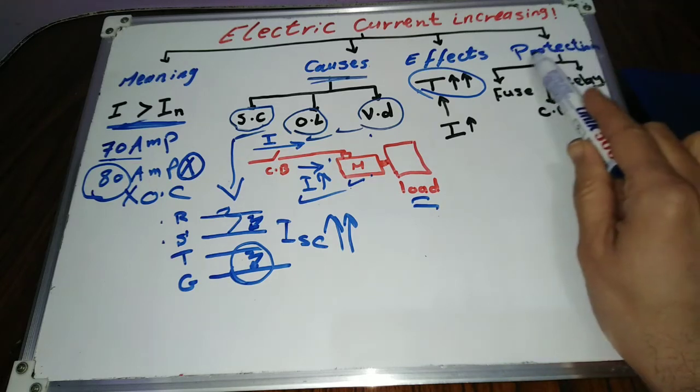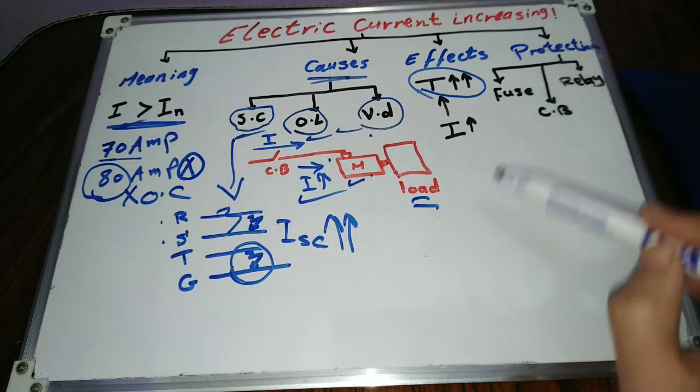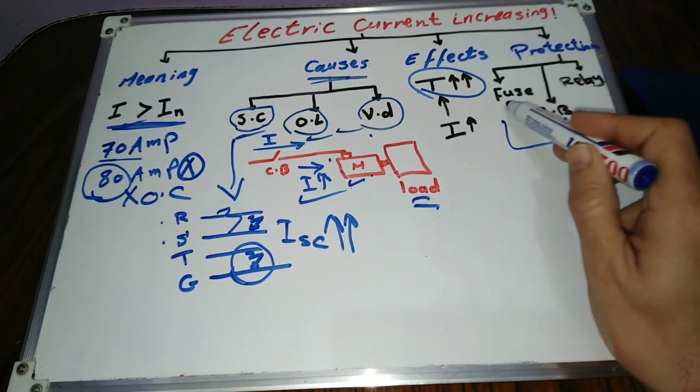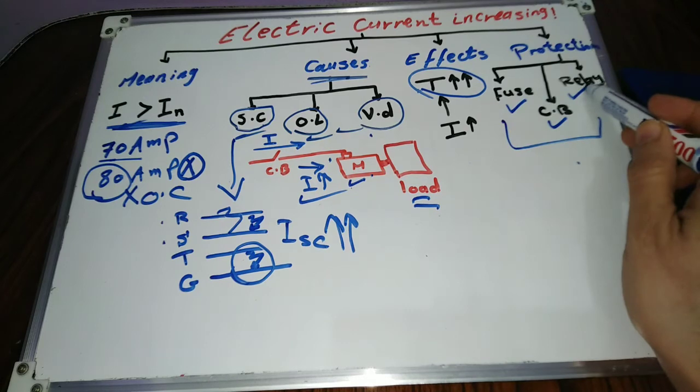Which device is used for excess current protection? The most common protection devices are circuit breakers, fuses, and protection relays.